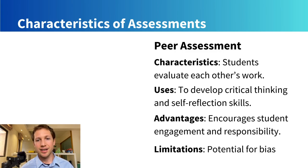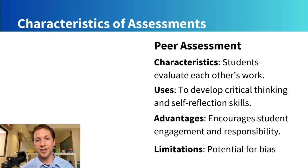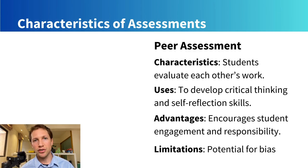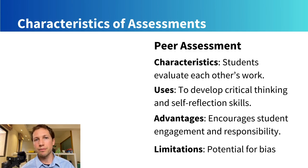There is a potential for bias in peer assessments, and they are dependent on student understanding. For example, a student might miss where a comma should have been placed if they haven't yet fully learned that skill.